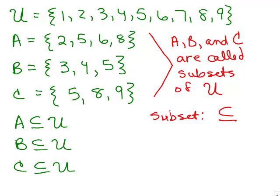I could also have a subset of A. So if we look at A, let's pick a subset from there. How about 5 and 6? So we'll take the set 5 and 6, and I'm going to say that's a subset of A, because it's a set that has some of the elements that are in A.